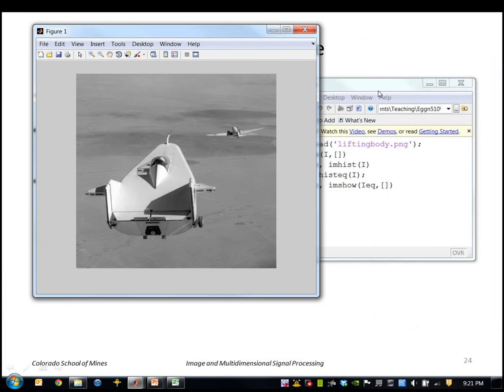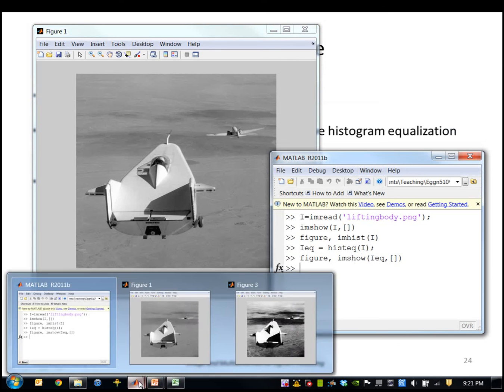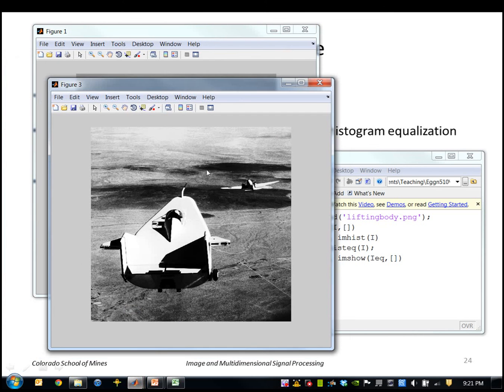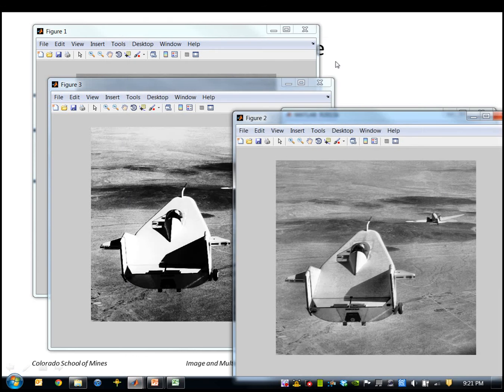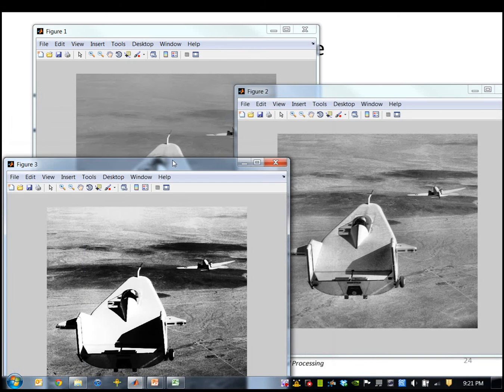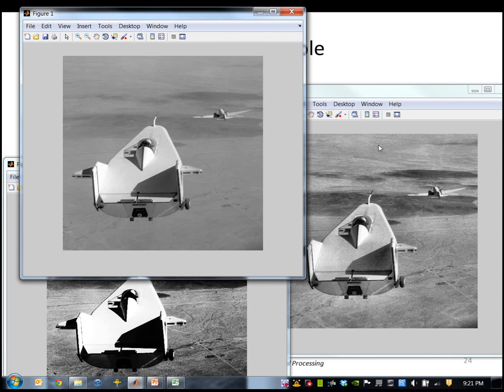That was my input as you recall. This was the regular histogram equalization and now I will do adaptive histogram equalization. This one is much better than the other two. As you can see we have plenty of detail in the background area but the area on the plane here is not completely washed out or blackened as it was on the regular histogram equalization.